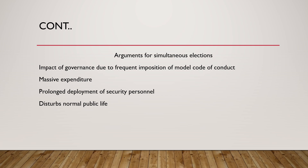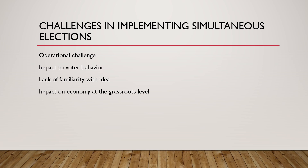What are the challenges in implementing simultaneous elections? There is a huge operational challenge. We have to go through many constitutional amendments for this. There are constitutional and statutory concerns in extending or curtailing the existing terms of some state assemblies to synchronize them. Some states might be in the middle of their five-year term. We need to amend Article 83, Article 85, Article 172, Article 174, and Article 356 of the Indian Constitution, which are related to elections, by-elections, and no-confidence motions.